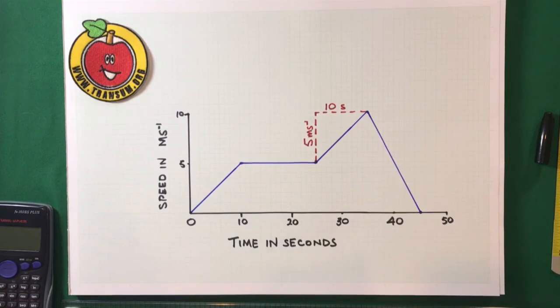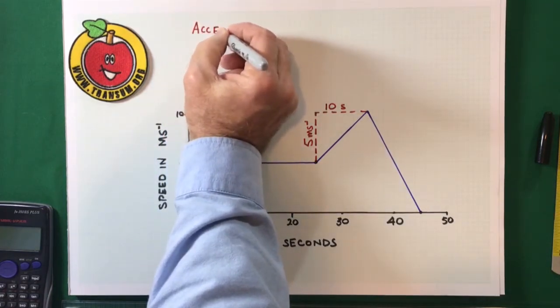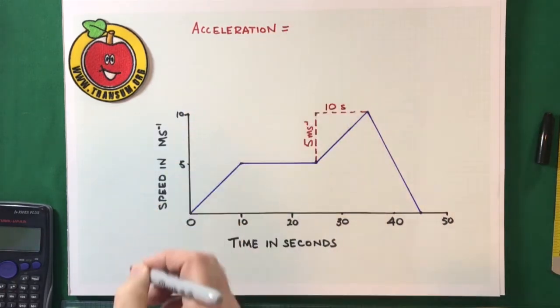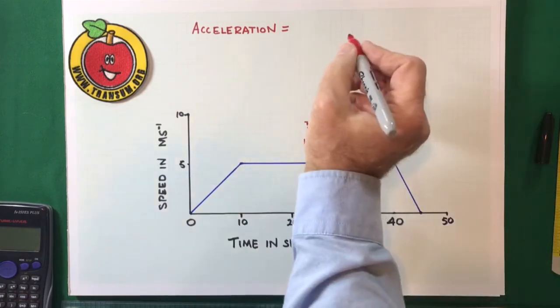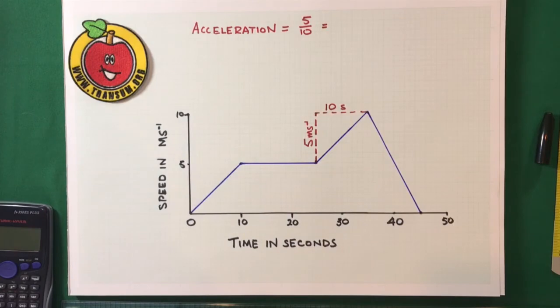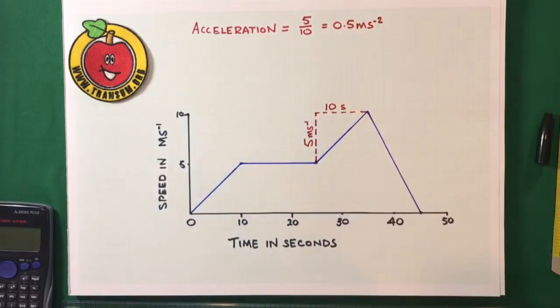So, the acceleration is rise over run, which in this case is equal to 5 over 10. Which, of course, cancels down to be a half or 0.5. And the units for acceleration would be meters per second squared or ms to the minus 2.